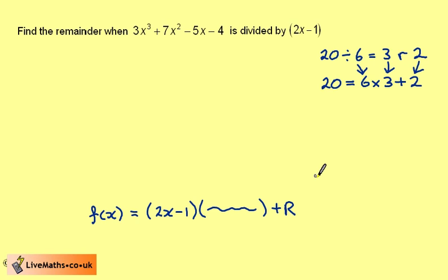The situation is the same here. We have 2x minus 1 as the divisor. This would be the quotient and a remainder.